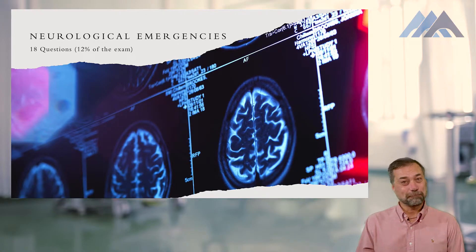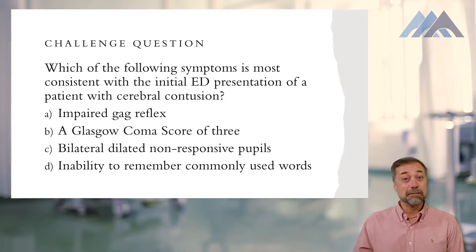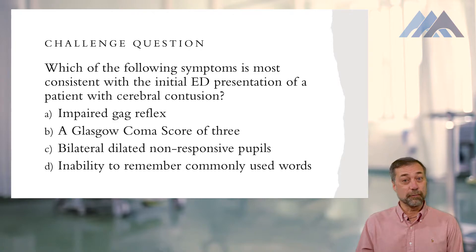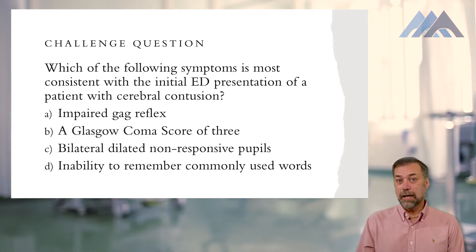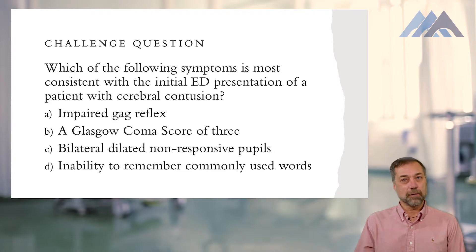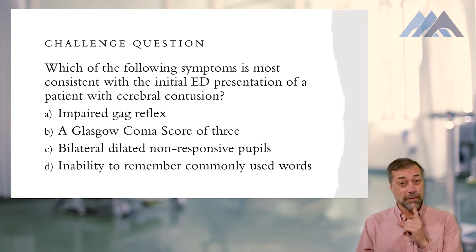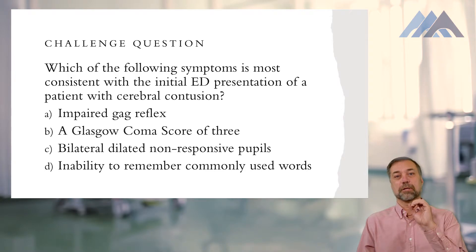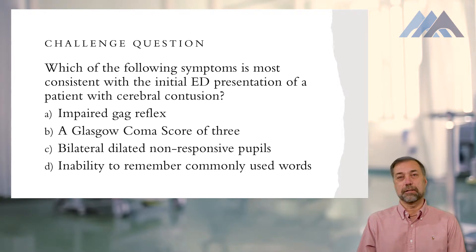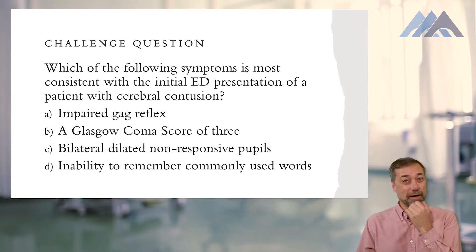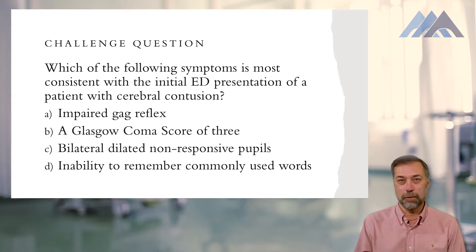We're going to start with a challenge question: Which of the following symptoms is most consistent with the initial ED presentation of a patient with a cerebral contusion? A. Impaired gag reflex. B. A Glasgow Coma Score of 3. C. Bilateral dilated non-responsive pupils. Or D. Inability to remember commonly used words. The question is asking about the initial ED presentation of a cerebral contusion — pause if you need to, because I'm going to move on, but I will give you the answer in a bit.